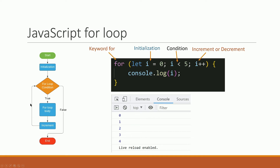i is incremented by one. i changes to two; is two less than five? True. So console.log prints two. Then i is incremented again — i++. So two becomes three; is three less than five?